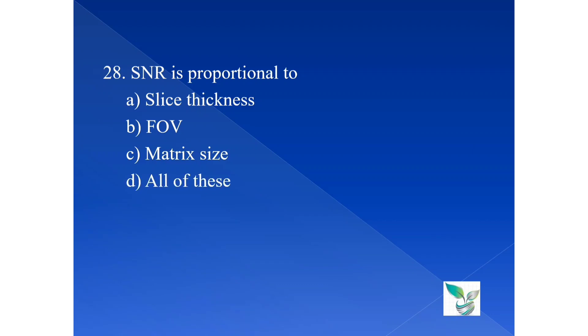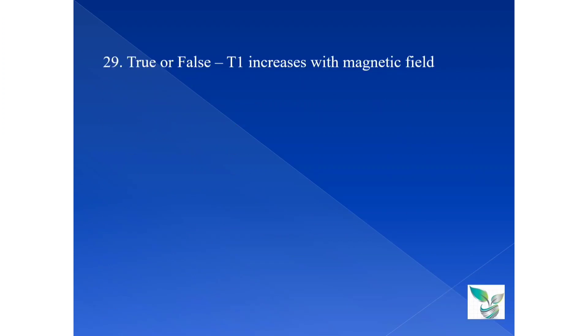Moving on to the next question, question number 28. SNR is proportional to. SNR means signal to noise ratio. Option A, slice thickness. Option B, FOV, that is field of view. Option C, matrix size. And option D, all of these. The answer is option D, all of these. That is, signal to noise ratio is proportional to slice thickness, field of view, as well as matrix size.